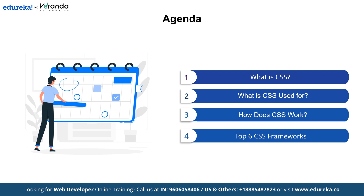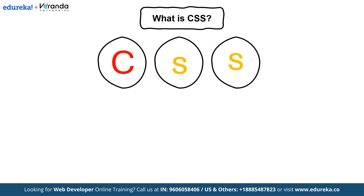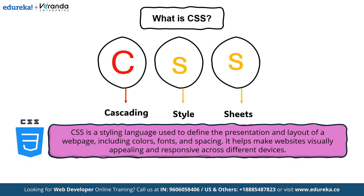Now that we have clearly understood today's agenda, let's start with one of the core building blocks of web design, that is CSS. So what exactly is CSS? CSS stands for Cascading Style Sheets. It is a styling language which helps to define the presentation and layout of a web page. This includes everything from colors, fonts and spacing — basically the overall design of the web page. Think of it as the magic behind making websites look visually appealing and responsive no matter what device you are using. Without CSS, a website just looks like a plain and unformatted document. So mastering CSS is an absolute must for every developer.